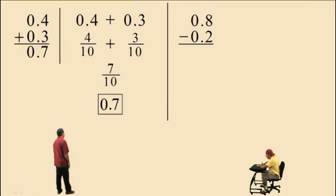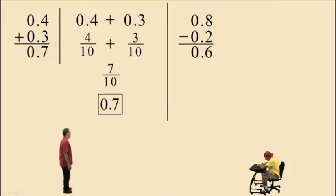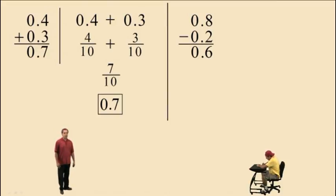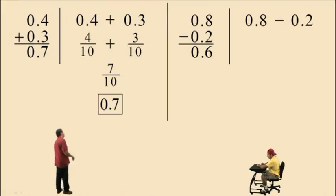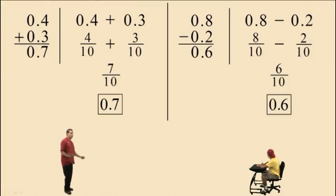Here we have a subtraction problem. Again, we line up the numbers by place value. Eight tenths subtract two tenths: eight subtract two is six, zero subtract zero is zero. Our answer is six tenths. Let's again perform the calculation by first converting the decimals to fractions. We have eight tenths subtract two tenths, which is six tenths as a decimal — zero point six. And there's our answer.